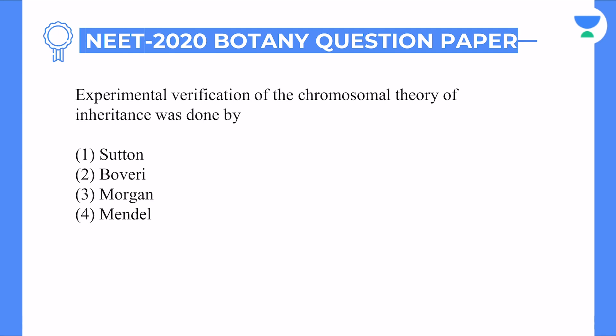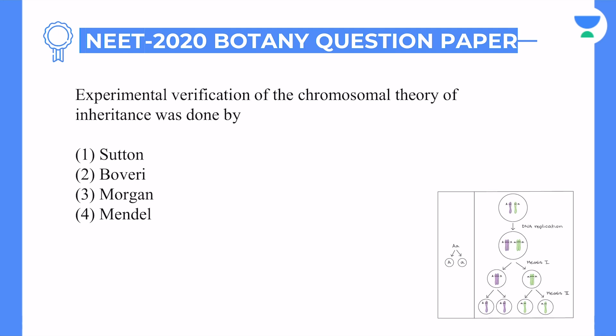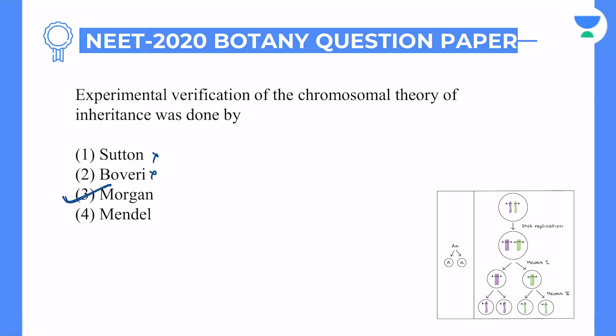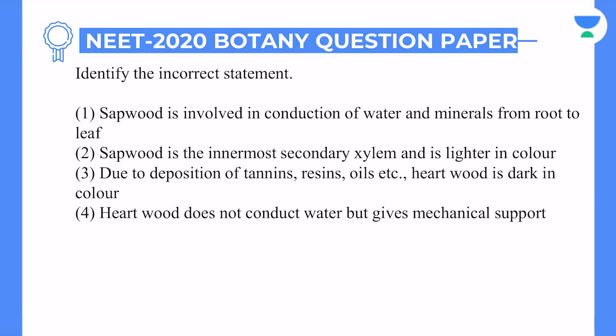The next question: experimental verification of the chromosomal theory of inheritance was done by whom? Experimentally, the proof was actually done by Morgan. When you look at the chromosomal theory of inheritance, many children tick Sutton and Boveri, but that is because it was proposed by those two. So Sutton and Boveri will not be the answer. The answer will be Morgan, because experimental proof — he is also known as father of experimental genetics. Answer is option number three.